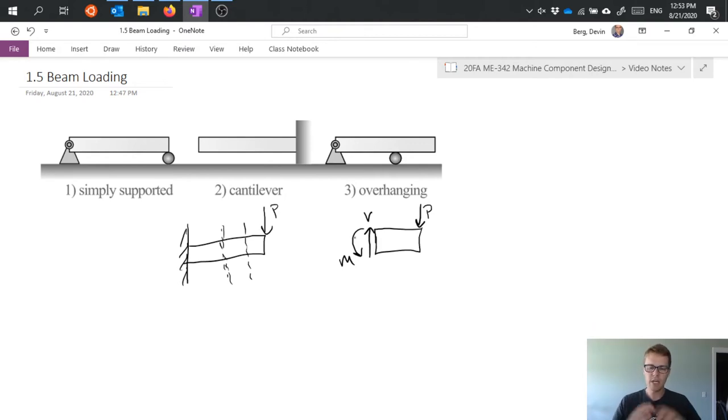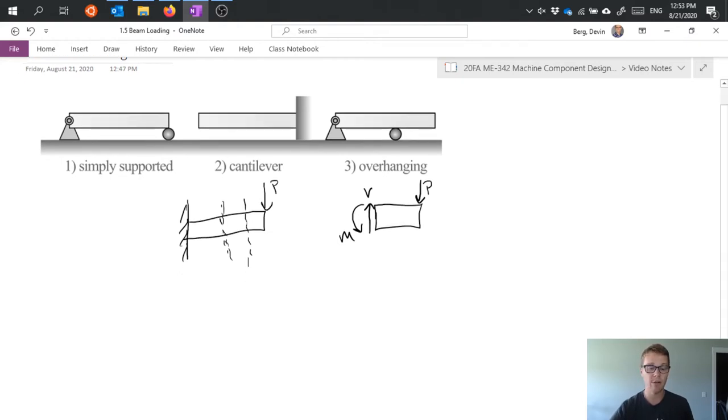And it's important for machine component design, because a lot of times the different things that we talk about that are machine components are mounted to shafts. There's a lot of rotational motion in machines. So things tend to be mounted on shafts and shafts are pretty good examples of beams of this type. So it's nice to have an understanding of how to model those.